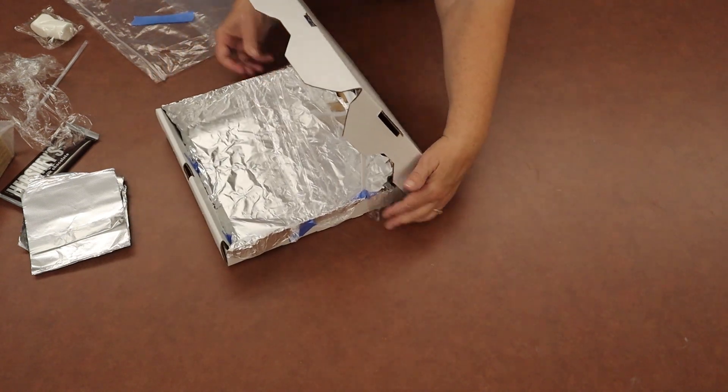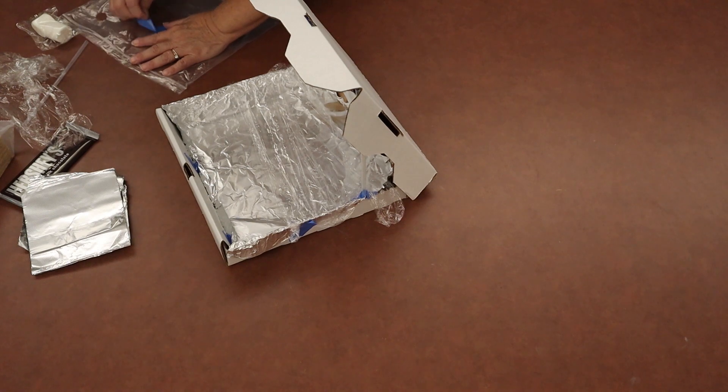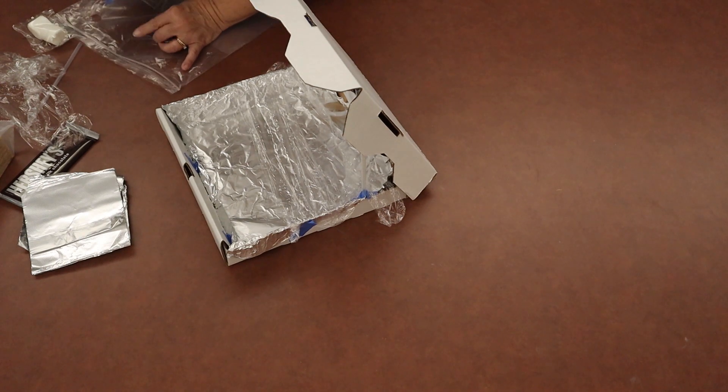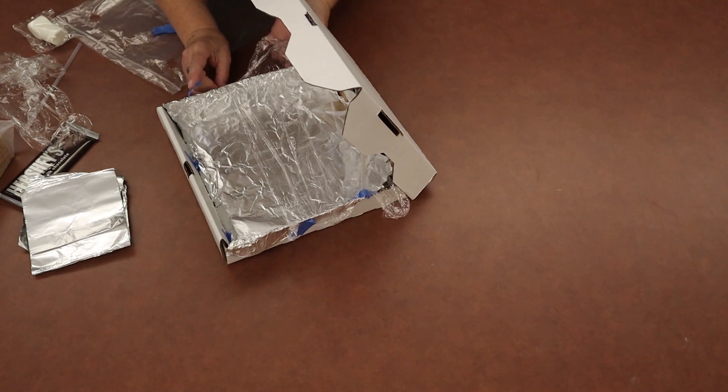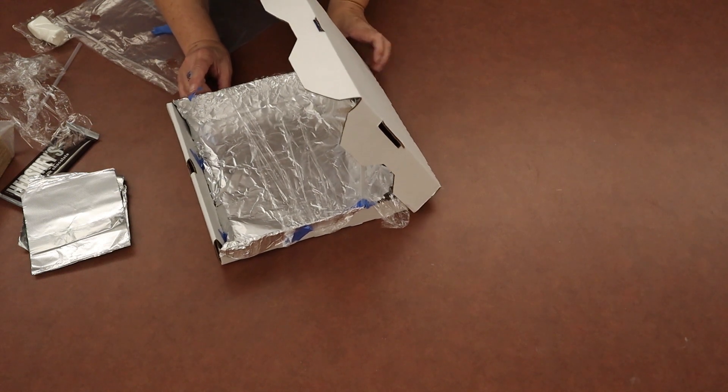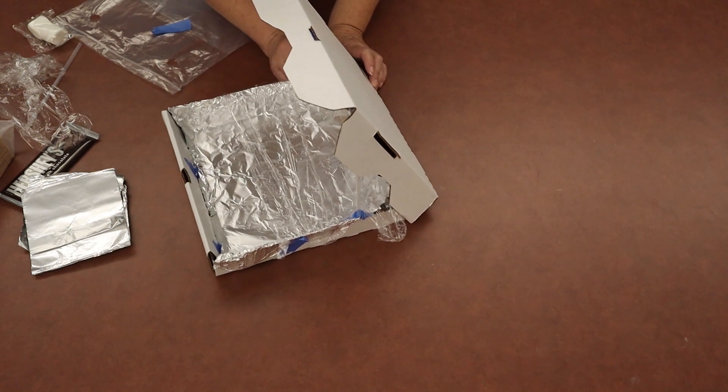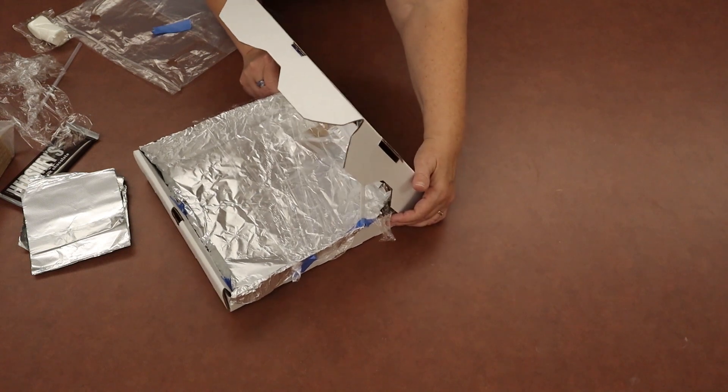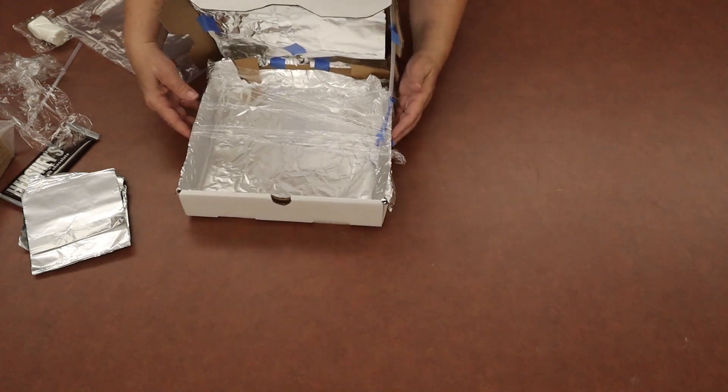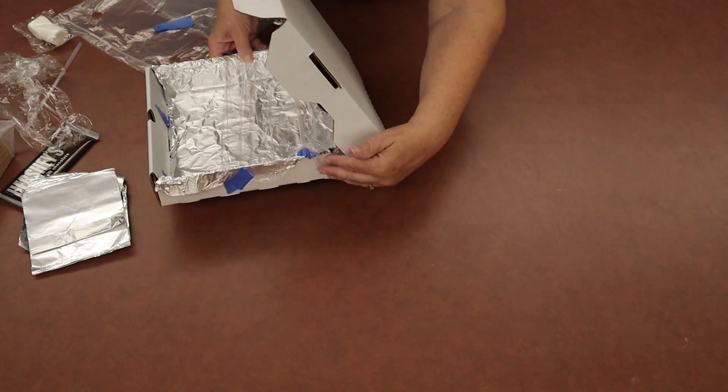It doesn't take much tape, just a little bit to keep it. Again, you may have some wind when you're outside doing your experiment, so you want to make sure that your plastic wrap doesn't blow out. Just tape it down to the side of the box.